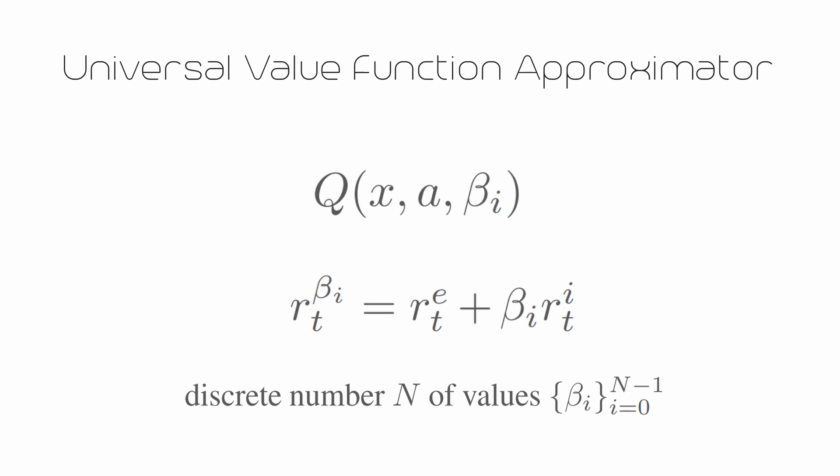The advantage of the universal value function is in its efficiency, as the exploitative and exploratory policies share behaviors, especially when you learn a function on multiple beta values that range from the two extreme policies.